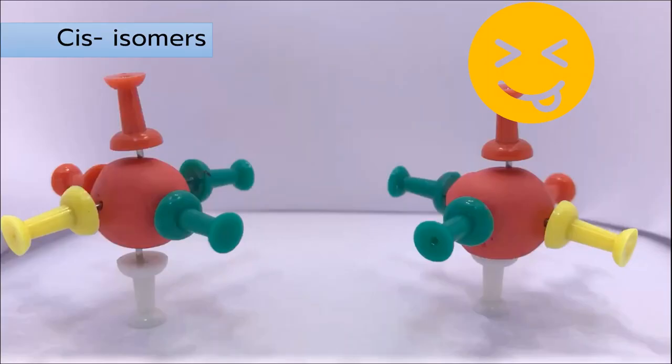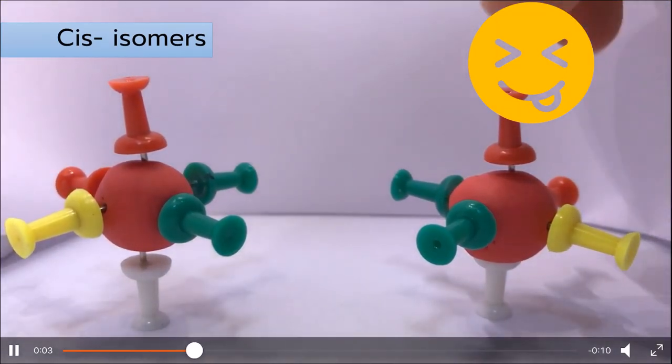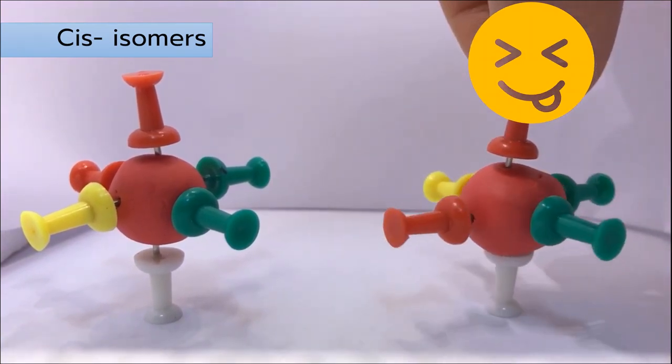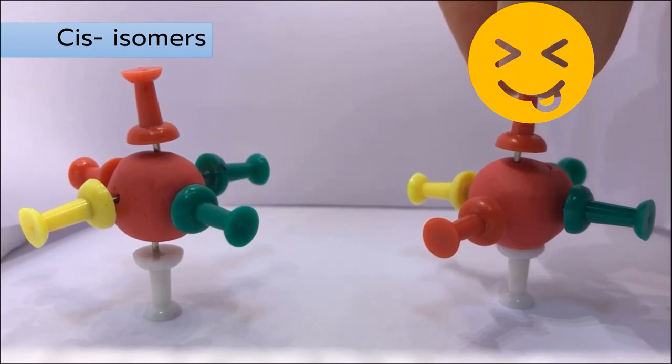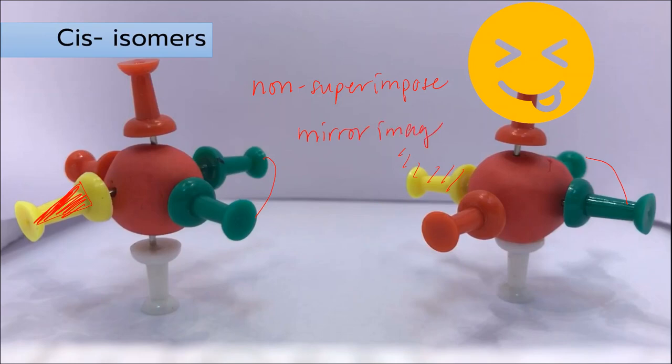Compared to the cis isomer that you see earlier, the cis isomer you cannot rotate to make them look exactly the same. Here you see the green on the right, but this one sticks out, this one going inside. So these are non-superimposable mirror images of one another. So this is an optical isomer.